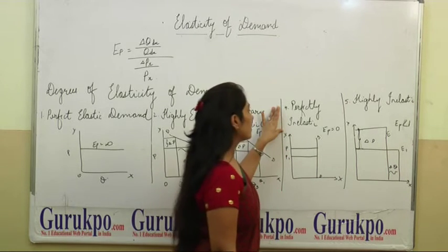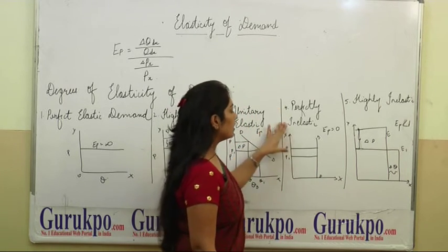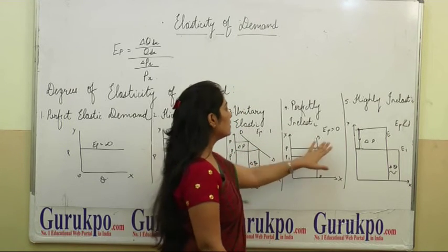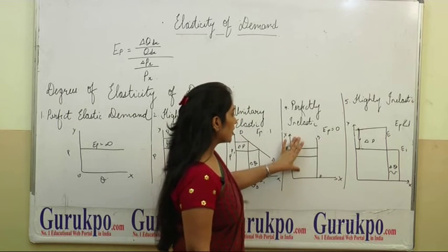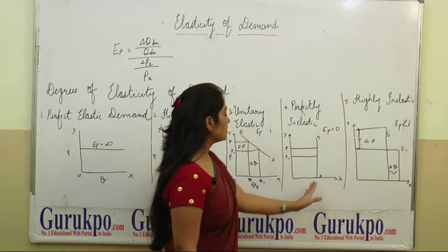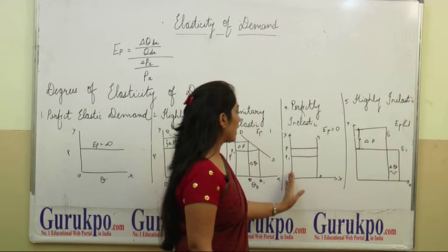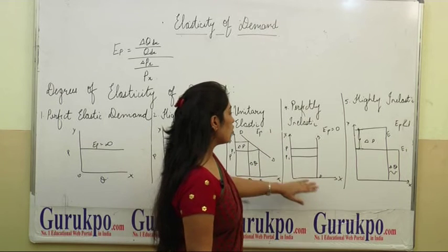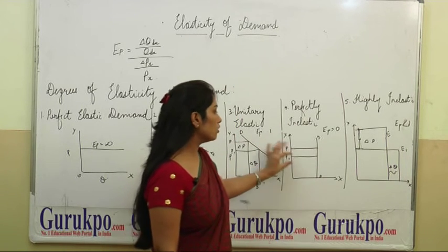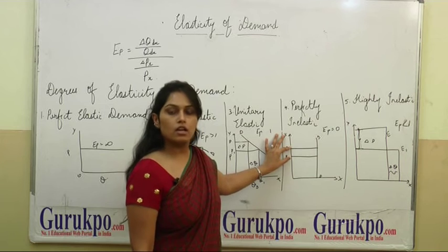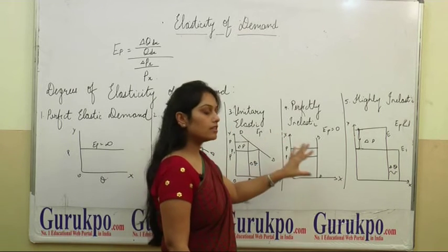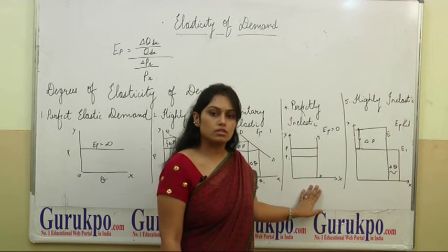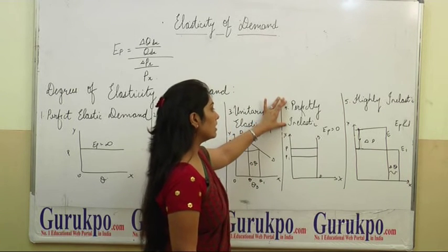The fourth degree is perfectly inelastic demand, where Ep is equal to 0. In this diagram, the graph is vertical, parallel to the y-axis. This means there is no change in demand even though there are changes in price. With the change in price, there is no change in demand, or only a very slight change that is not even notable. This is perfectly inelastic demand.